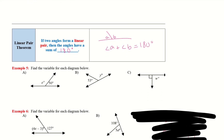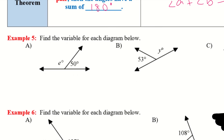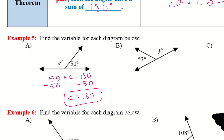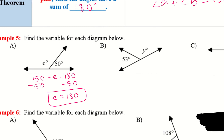Let's try a couple of these. For 5A, one side is E and the other is 50. So 50 plus E equals 180. Subtract 50 — E equals 130. Another way to think about it: for B, one part is 53 and the other is Y. I can do 180 minus 53, which gives Y equals 127.